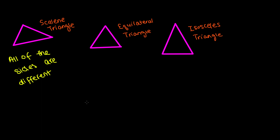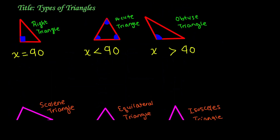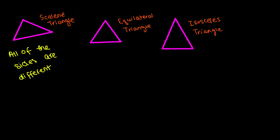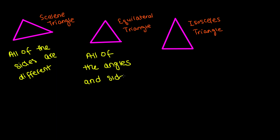Next we have an equilateral triangle. Just from looking at it, it looks a lot like our acute triangle, because most equilateral triangles are acute triangles — all of the angles equal 60 degrees. The measurements of the sides are always the same. So an equilateral triangle actually has three acute angles in it, and all of the angles and sides are the same.